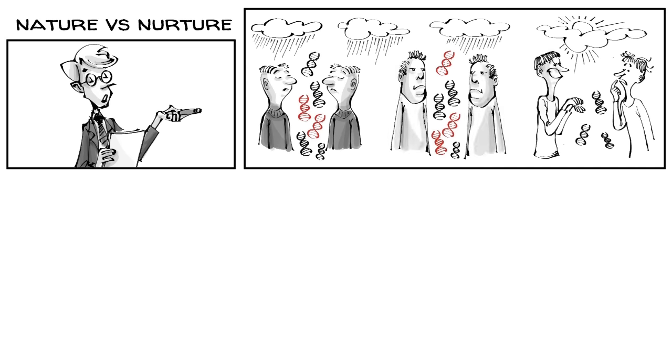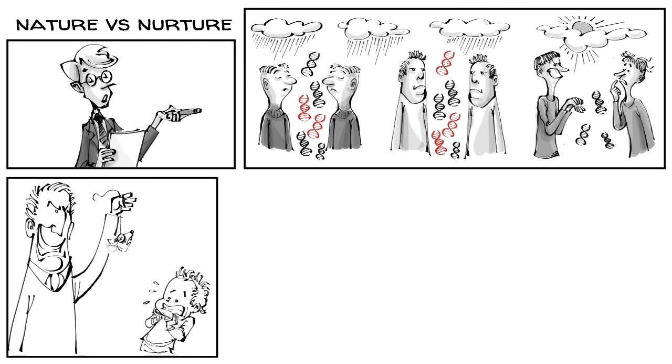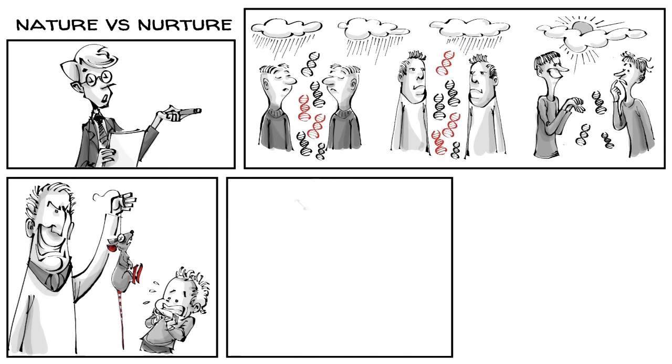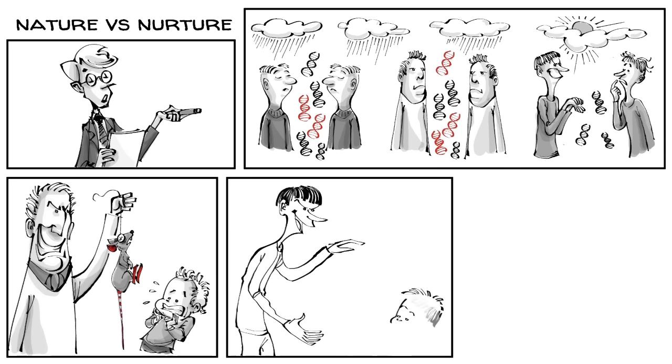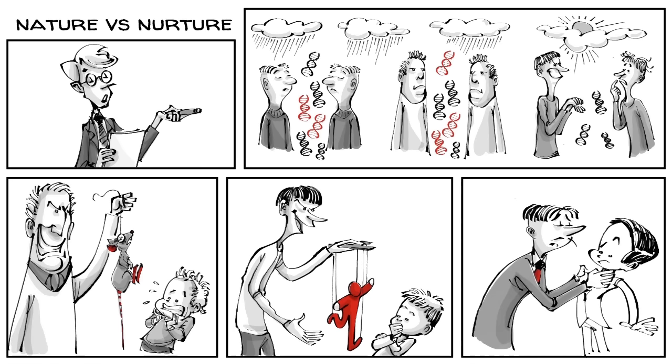However, the environment also matters. A psychopath may not only pass down his genes, but influence a child by being a role model. A Machiavellian father shares with his son not only genetic material, but might also show him all his tricks. The son of a narcissist not only gets his dad's chromosomes, but may also experience his perfectionism.